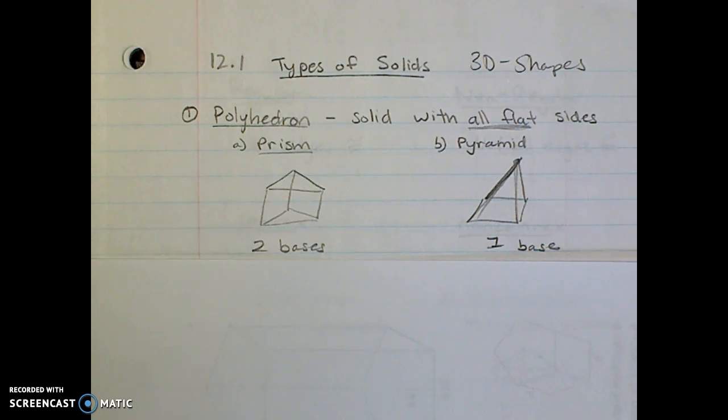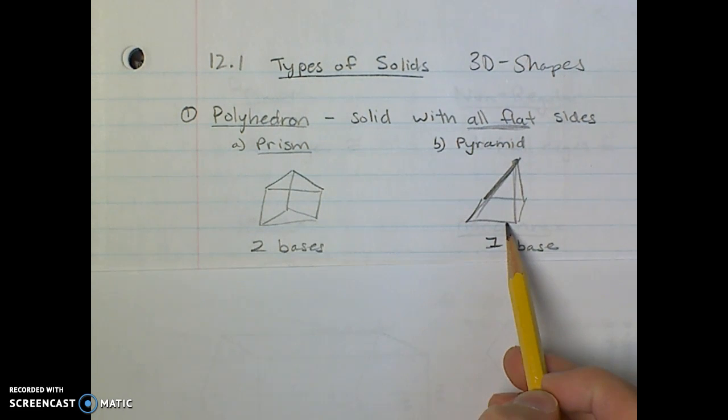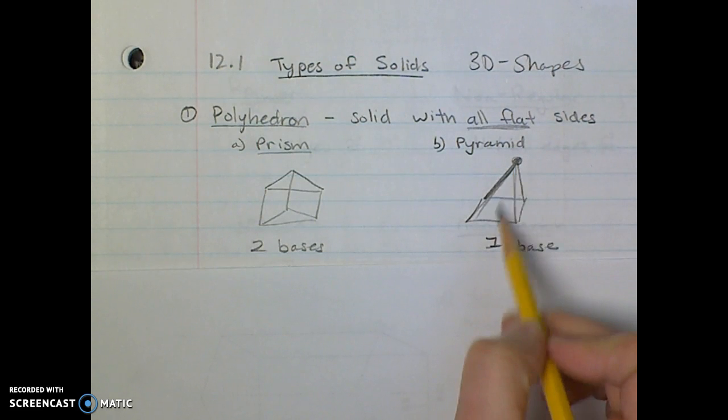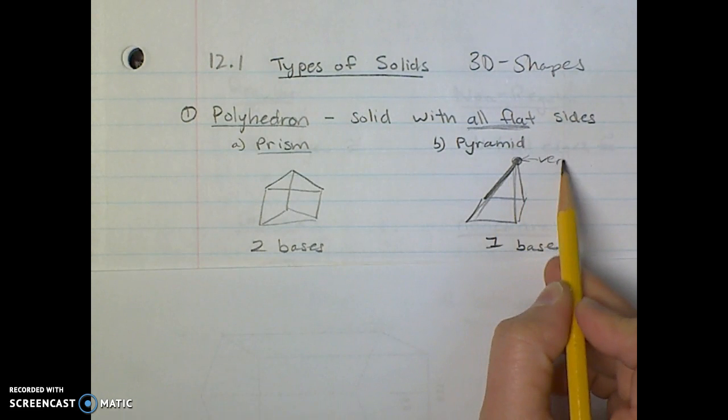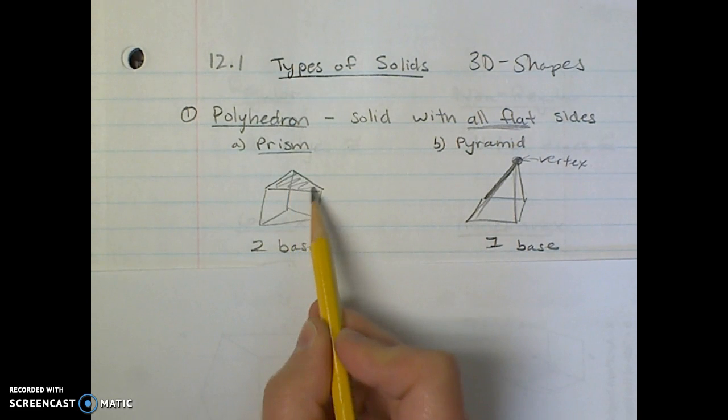An example of a polyhedron would be a prism like this or a pyramid like this. You can see that the differences: for a pyramid, each of these flat sides meet at one point, one vertex, whereas a prism has two bases.